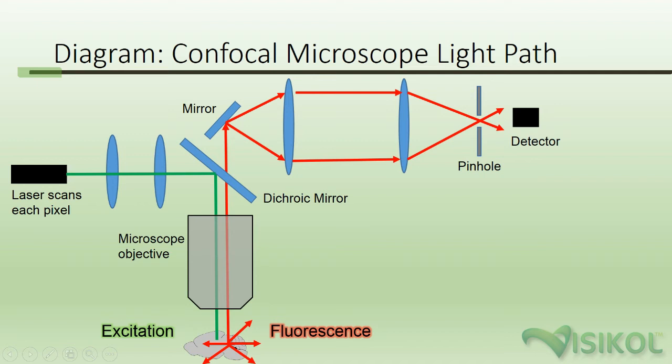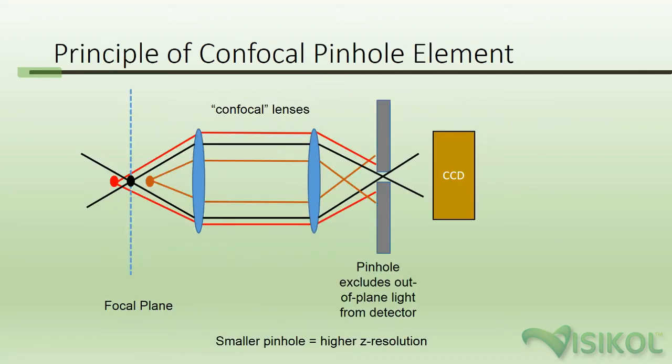As the excitation light source passes through the cleared and labeled tissue, it will cause all the fluorophores in its path to fluoresce at a different wavelength than the excitation wavelength. This fluorescence is then captured by the microscope's objective and passed through a dichroic mirror, which reflects the excitation wavelength but allows the emission wavelength to pass through. The key feature of the confocal microscope is its pinhole mechanism, which is what differentiates it from a standard epifluorescent microscope.